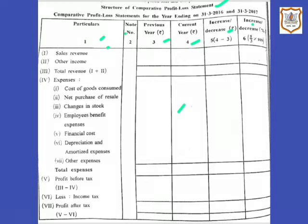The first component is revenue from operations. Revenue from operations is the revenue earned from the principal revenue-producing activities, that is, the business of the enterprise — also known as operating activities. Examples include sales, sale of scrap, trading commission, cash discount received, and revenue from services. It is the first item in the revenue section of the statement of profit and loss. Next is other incomes — these are incomes which are not revenue from operations, i.e., not from the principal revenue-producing activities. Examples include rent received, interest and dividend received, and profit from sale of fixed assets.